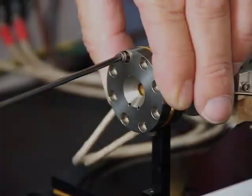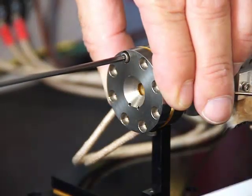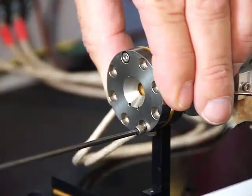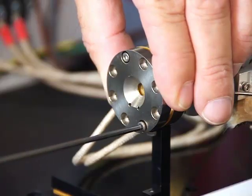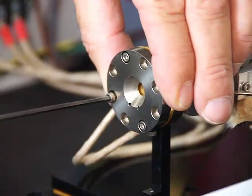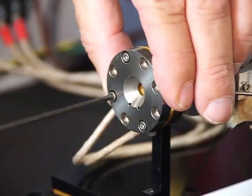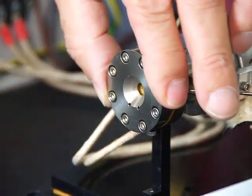Secure the end cap in place with one of the top screws. Continue assembly by adding screws at opposite sides of the cap. Install all screws loosely and allow play within the cap to remain.